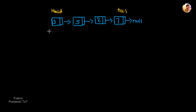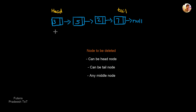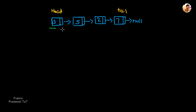In deletion, there are 3 conditions. If you want to delete a node, it can be a head node, or it can be a tail node, or we can delete the node in the middle of the linked list. For all 3 conditions, you can use pseudocode — this is useful for interviews or exam examples.